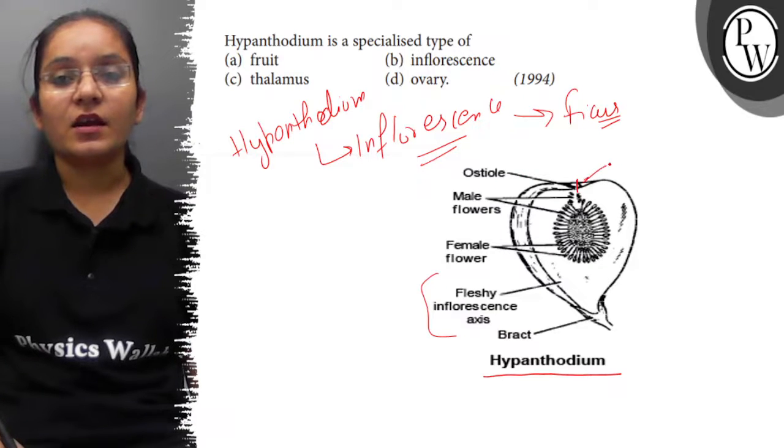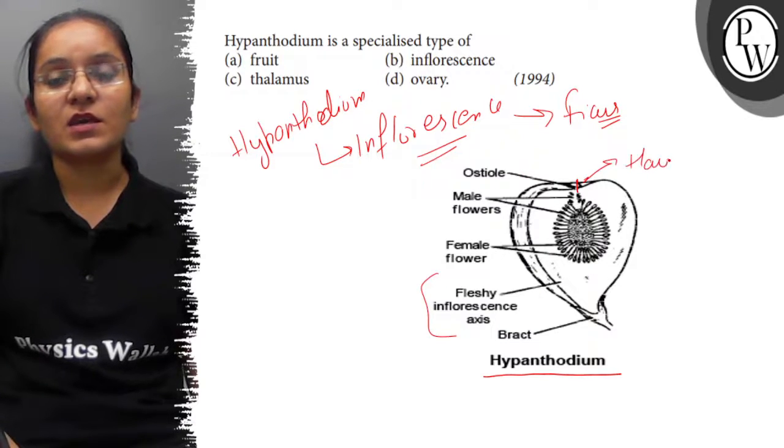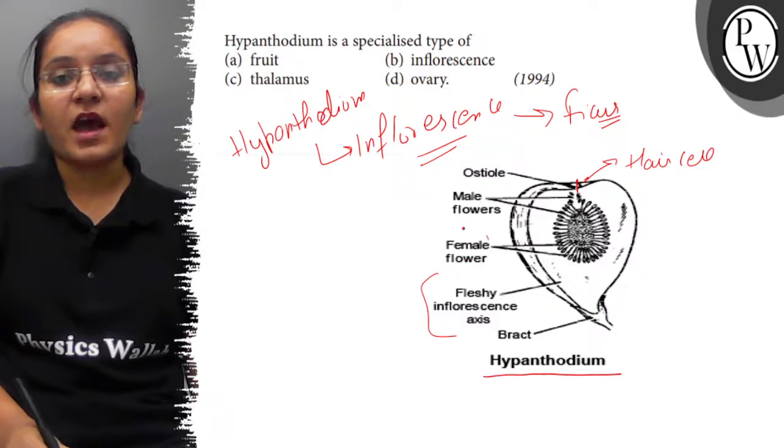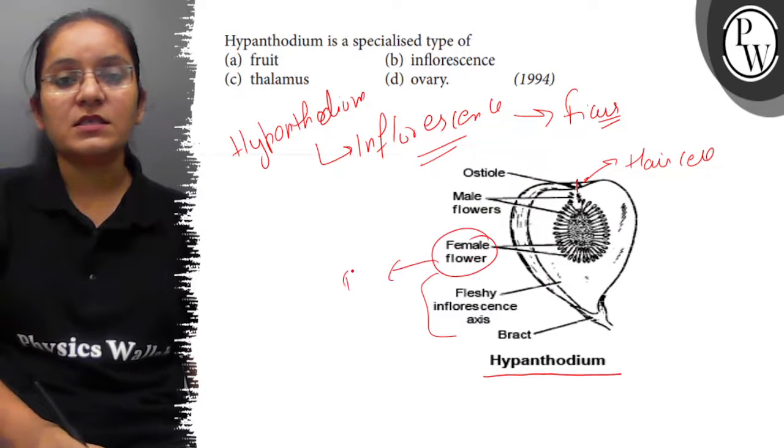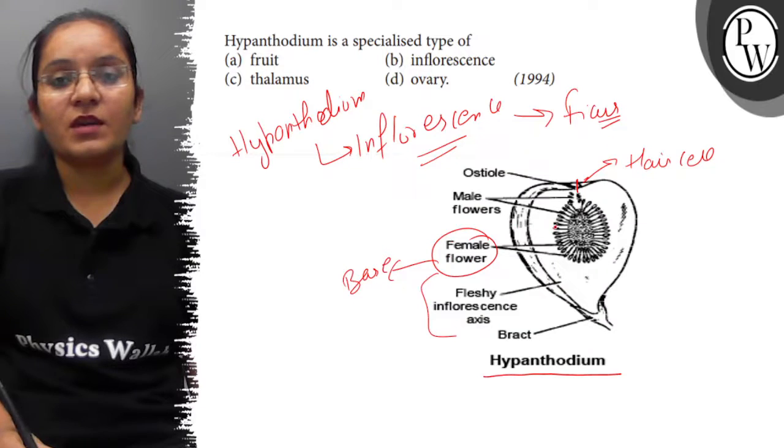The osteo opening is guarded by hair cells. Female flowers are found at the base in its cavity.